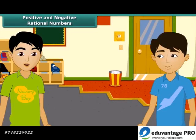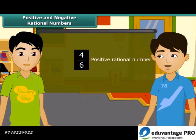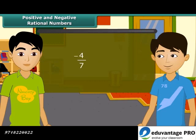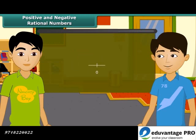Do you know what we call a rational number which has a positive numerator and positive denominator? That rational number is called a positive rational number, I guess. And what are negative rational numbers? When the numerator is a negative integer and the denominator is a positive integer — for example, minus 4 by 7.